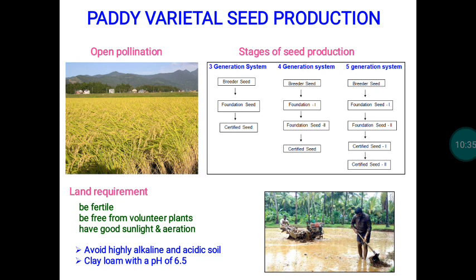If the selected land has an iron deficiency problem, the pollen production potential of the plant decreases. With fewer pollen grains available, there is insufficient pollen for pollination of female organs, ultimately resulting in low fertility and low seed yield. Therefore, the selected land should be fertile, free from volunteer plants, have good sunlight and proper aeration. We should avoid alkali and acidic soils; clay loam with a pH of 6.5 is ideal for paddy cultivation.